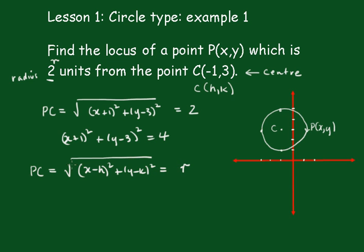Now, squaring both sides, we get the general result: x minus h, all squared, plus y minus k, all squared, is equal to r squared.